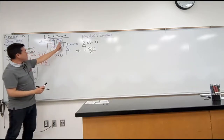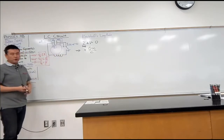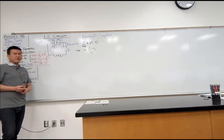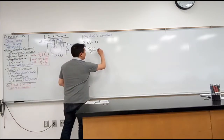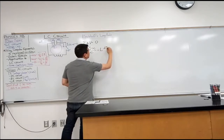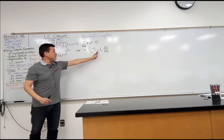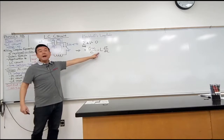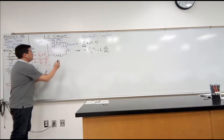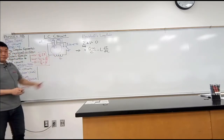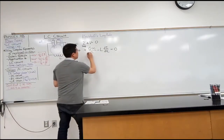As I go across the inductor, I lose voltage. So I write minus L dI/dt — that's the voltage change across the inductor. The minus sign is a reminder that I'm losing voltage as I go across this inductor of inductance L. So all of that added up should equal zero. That's Kirchhoff's loop rule.